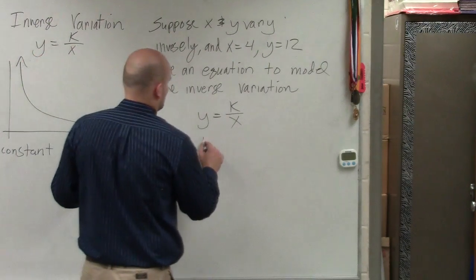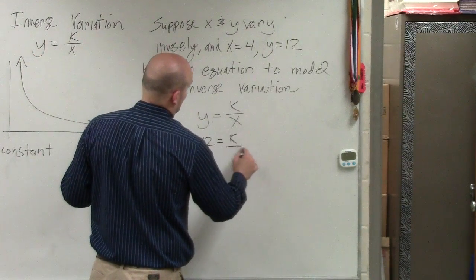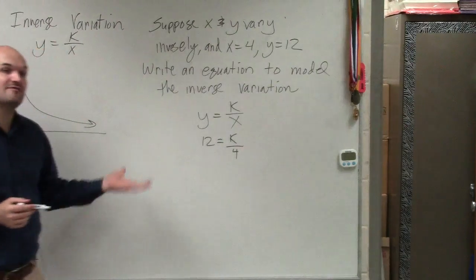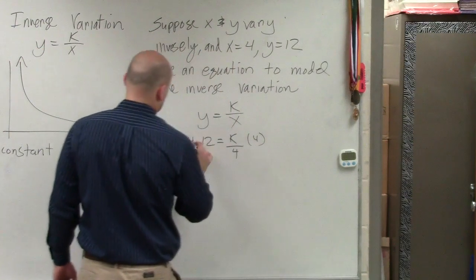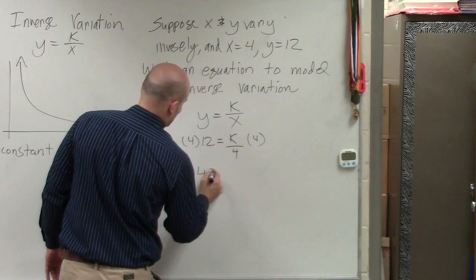Sure, absolutely we can. So we plug in 12 equals k over 4. Now we want to find our value k. So I multiply by 4 on both sides. And I get 48 equals k.